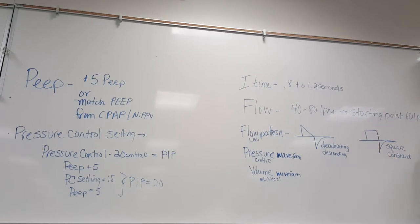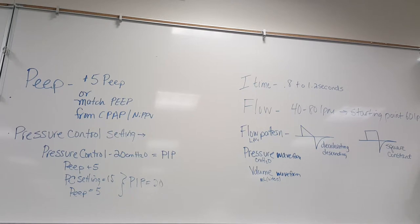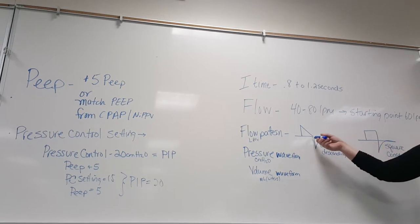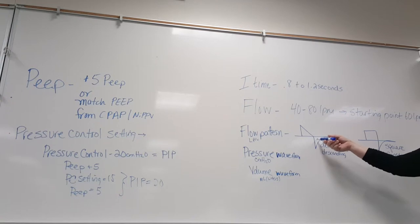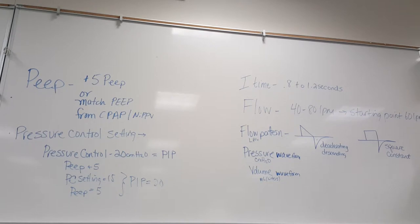Volume control defaults to the square pattern, and you need to change it to decelerating if you can. The Drager and the Servo don't let you change the flow pattern in volume control — it's just square. The PB and the Galileo let you change it. If you can't change it because the vent doesn't allow it, then you're just stuck with the square — it honestly doesn't make that much of a difference, but decelerating is preferred if you have the choice.